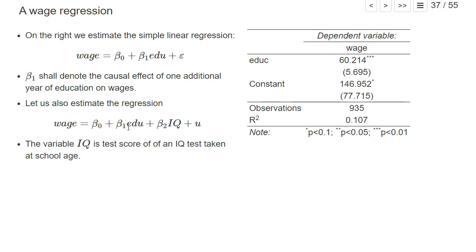Assume for the moment that intelligence is the only unobserved confounder and that we also have some source of exogenous variation in education, even though it's not really clear what is the source of exogenous variation. Then how would you expect if we add the test score of the IQ test, which is a proxy for the intelligence of a person.